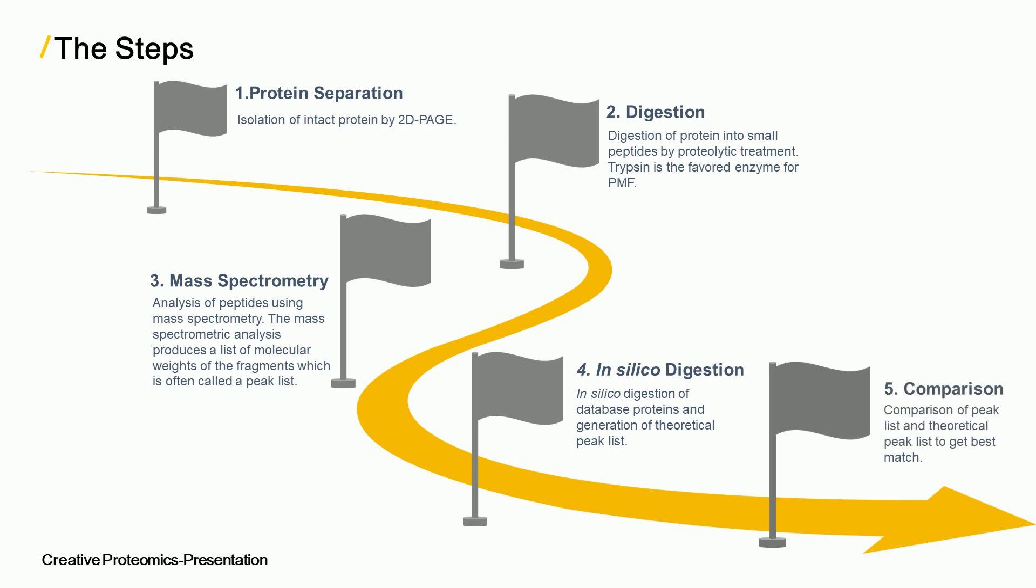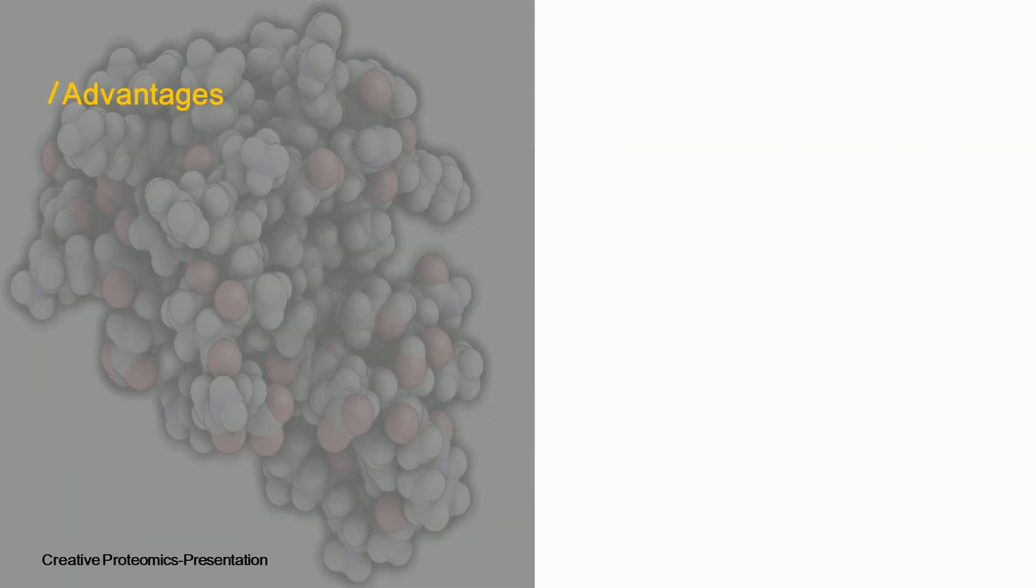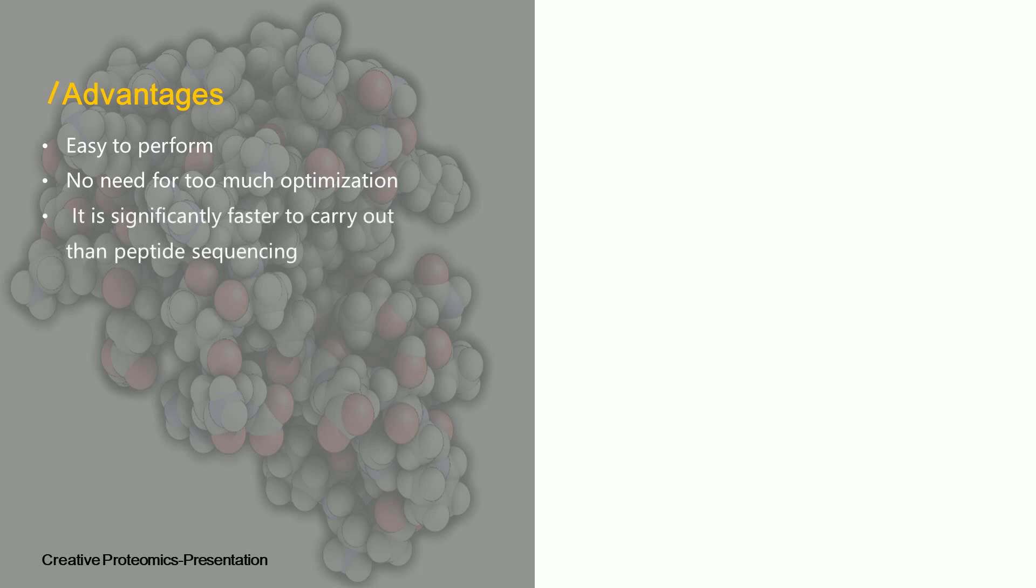Peptide mass fingerprinting is easy to perform and no need for too much optimization. It is significantly faster to carry out than peptide sequencing, and in this method only the masses of the peptides are needed to be known.